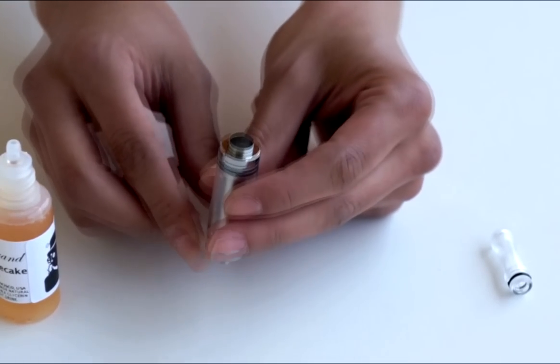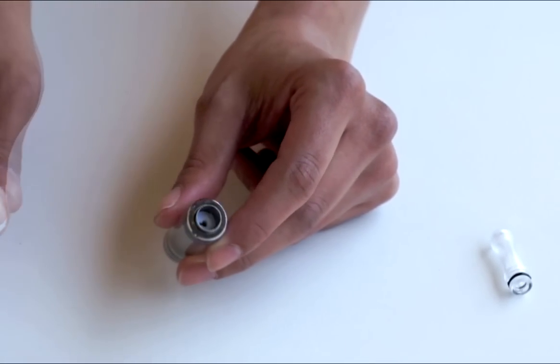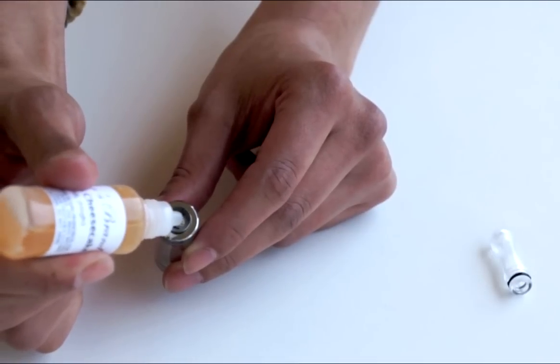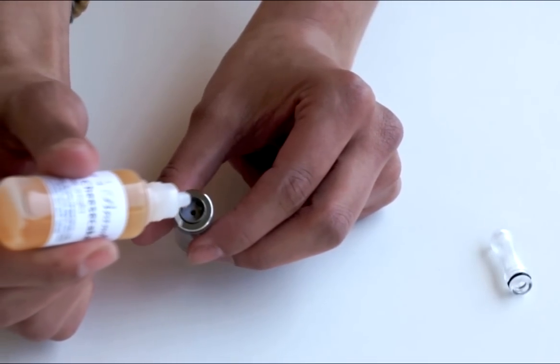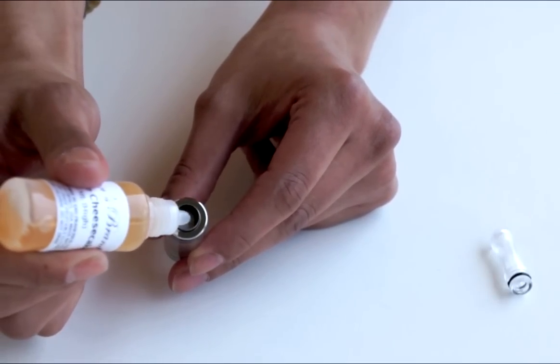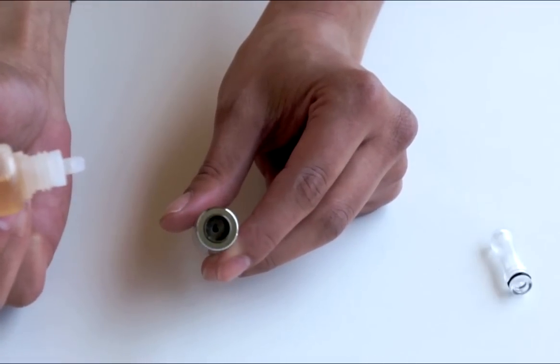Now, flip it over and completely fill the inside center column around where it heats, avoiding the center hole. Just spin it 360 degrees and fill it completely until it soaks in. Once that's ready,